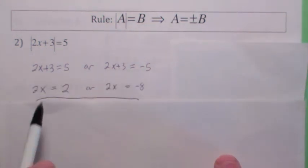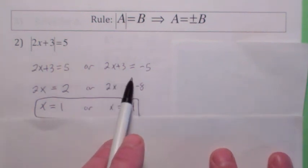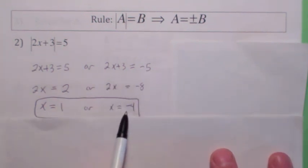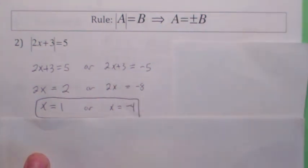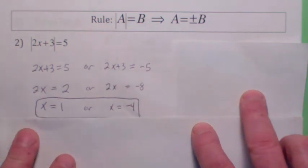And when you solve each one separately, here you would subtract 3 from both sides, so 2x equals 2, x equals 1. Here you would subtract 3 from both sides, so 2x is negative 8, so x is negative 4. There's two solutions. And you could check these. You could plug both of these into the equation and they should both check.